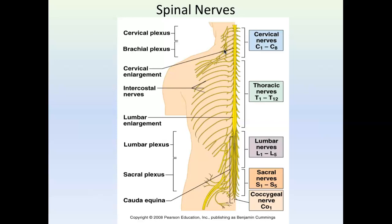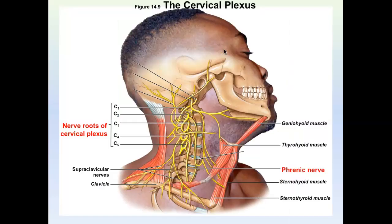For this exam — your nervous system exam — you're going to need to know the spinal nerves outlined and bolded for you. You need to know what plexus each nerve arises from, but you do not need to know the nerve numbers of the plexus. For example, the cervical plexus has fibers C1 through C5 intertwined — you don't need to know that. There's only one nerve you need to know that arises from the cervical plexus.